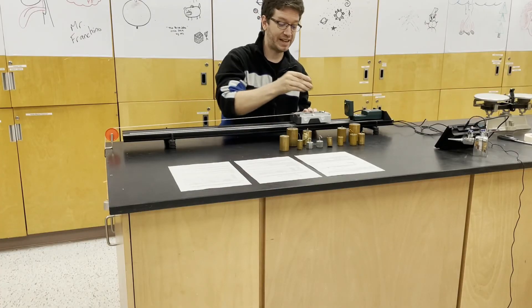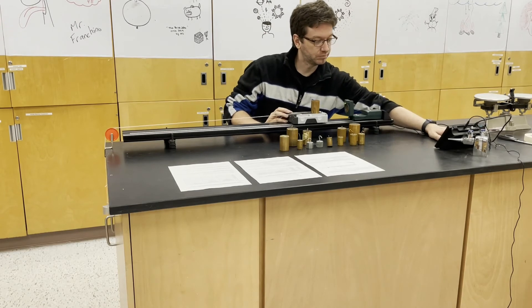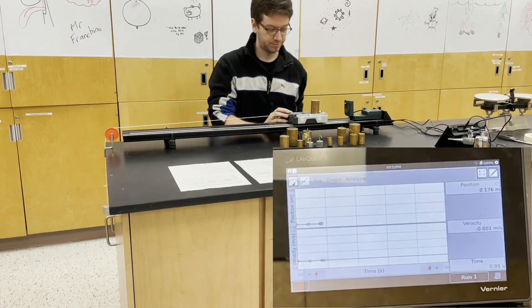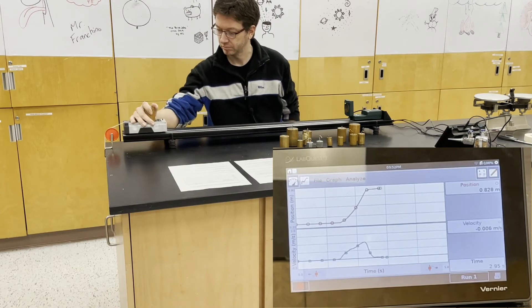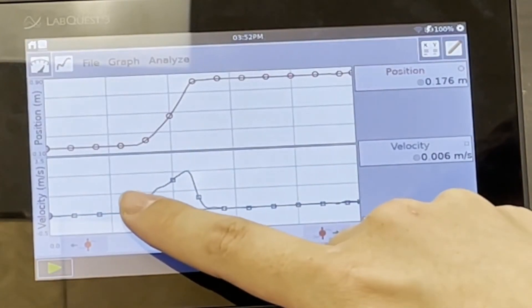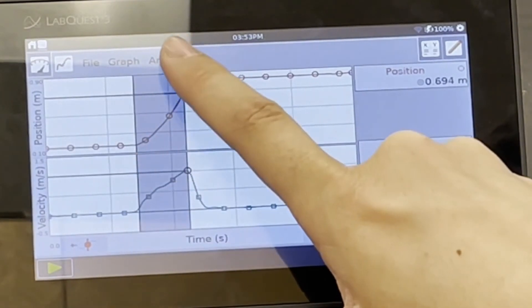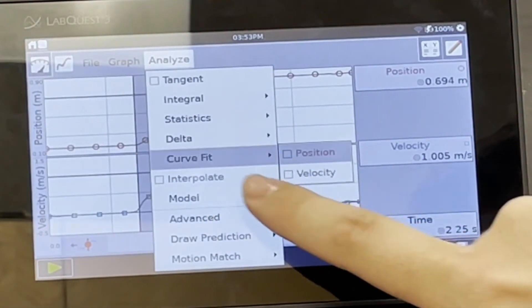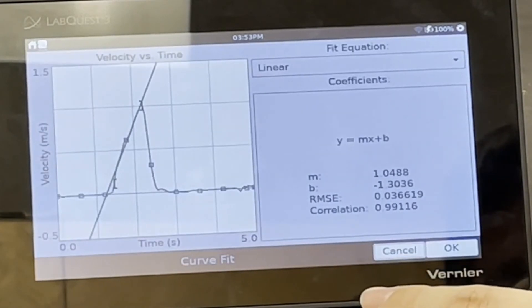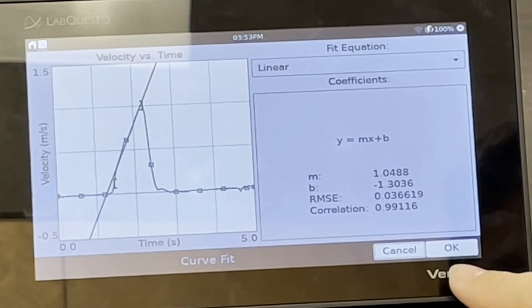Now we add 500 grams. So here our acceleration is 1.0488 meters per second squared.